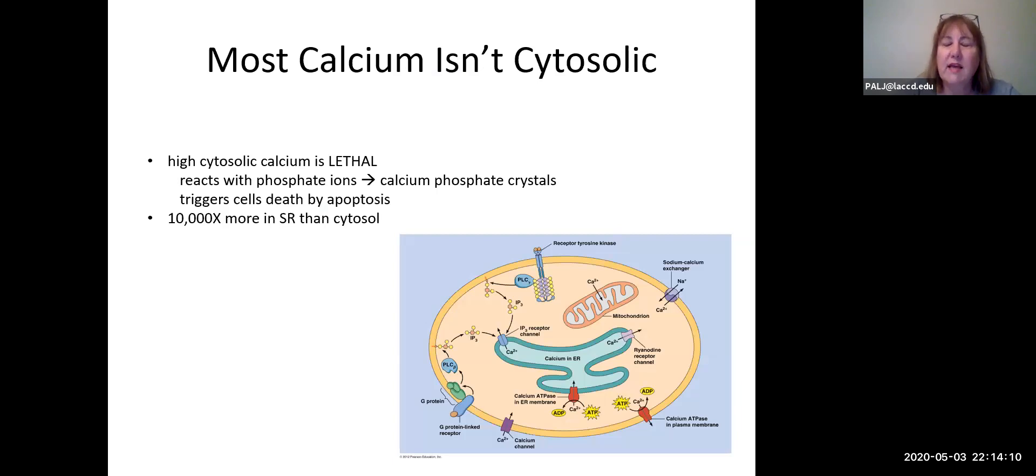Let's talk about calcium for a second. Most of the calcium in a skeletal muscle cell is not floating around in the cytoplasm where you might expect it, and that's because high cytosolic levels are lethal. The cell will die because calcium reacts with phosphate, you get calcium phosphate crystals, and that precipitates a series of reactions where the cell kills itself.